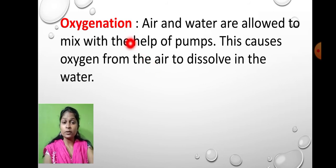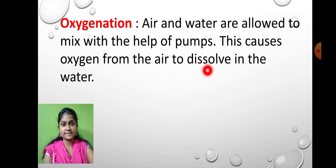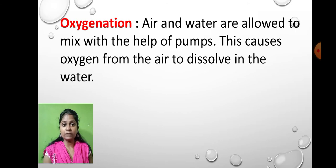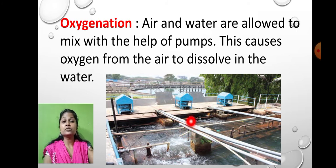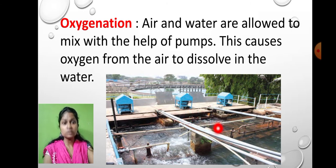So here we artificially allow oxygen to go inside the water, which increases the oxygen level in the water. When the oxygen level increases, the water gets purified and there is no harmful effect on the animals or plants present in the water. Pipes, machines, and pumps are used to push air and oxygen into the water.